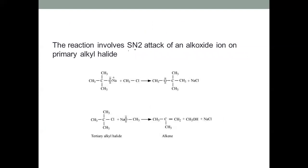The mechanism followed is SN2. For example, taking sodium tertiary butoxide (a tertiary alkoxide) and a primary alkyl halide — this is primary alkyl halide, that is tertiary sodium butoxide — the alkoxide ion attacks the primary alkyl halide. Chlorine is lost, resulting in the formation of tertiary butyl methyl ether, which contains a tertiary butyl group and a methyl group on the oxygen atom.